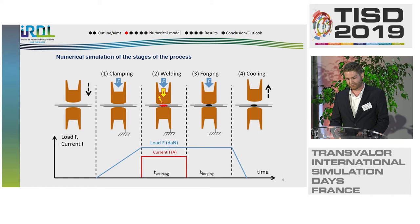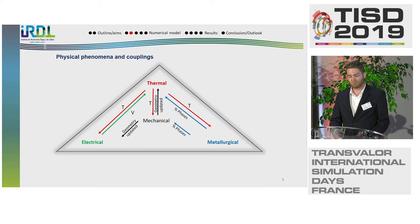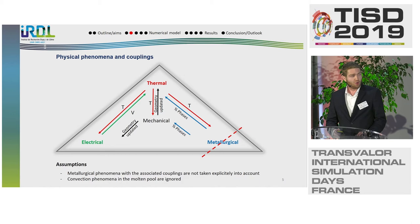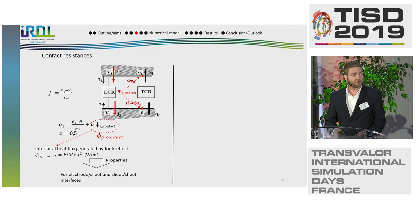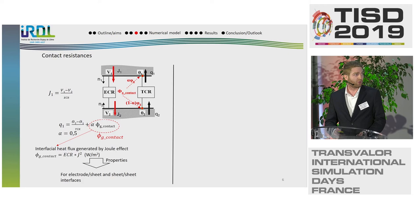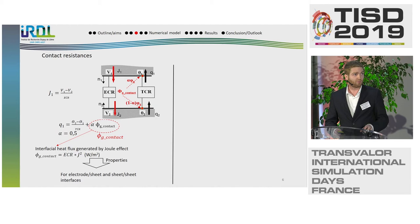In the first approach, the model has been reduced to the consideration of the coupled electrical, thermal, and mechanical phenomena. We do not take into account the metallurgical phenomena and associated couplings, and we also do not take into account the convection phenomena occurring in the molten pool. Concerning the electrothermal contact model, two contact resistances are used: the ECR for electrical contact resistance and TCR for thermal contact resistance. The partition coefficient of the heat flux generated by Joule effect, because of the electrical contact resistance, is equal to 0.5 in the model. The ECR and TCR are dependent on the temperature and the maximum normal stress (Pmax), due to the plastic deformations of the asperities along the contact surfaces.